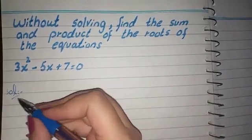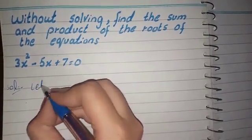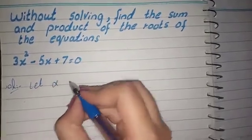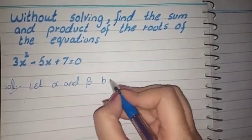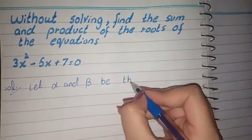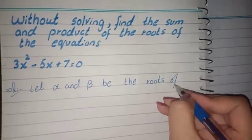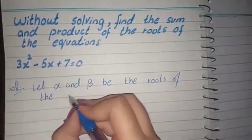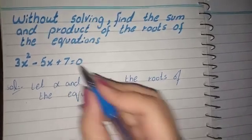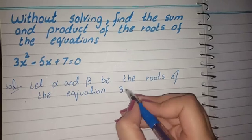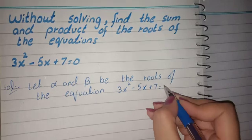First of all, our solution starts here. Let alpha and beta be the roots of the equation 3x² minus 5x plus 7 equals to 0.